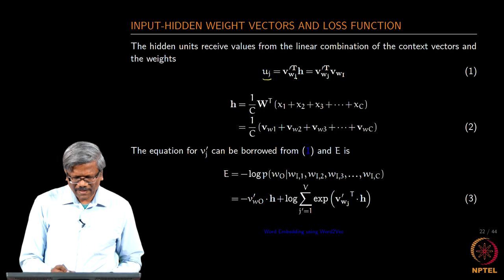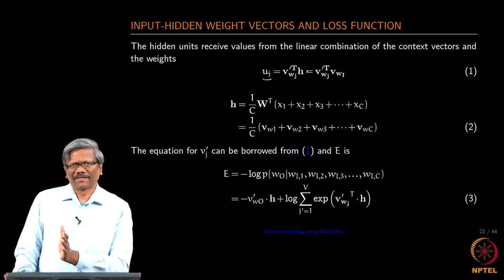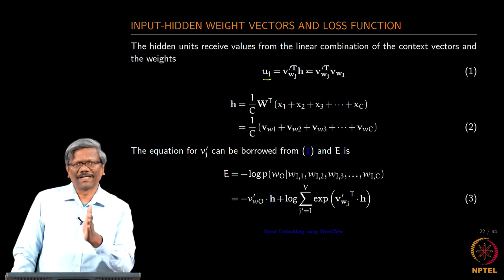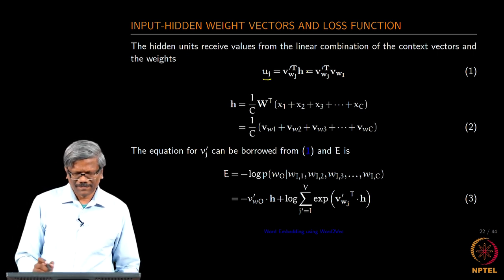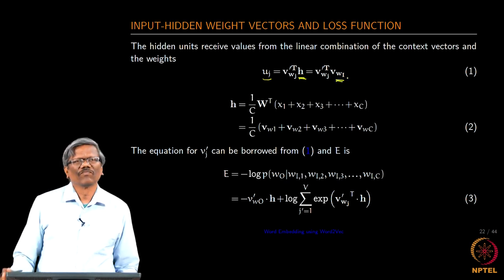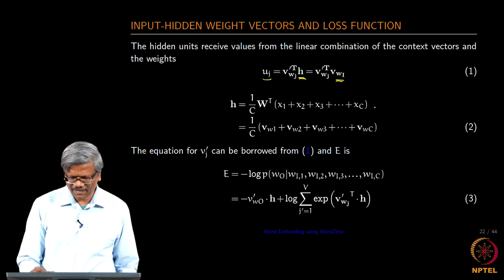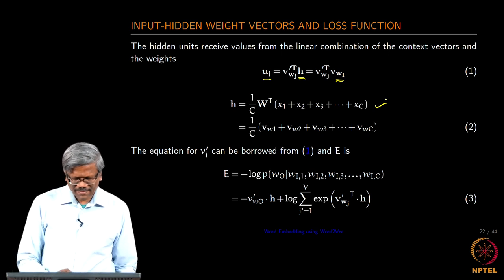The u_j is the context vector that we are talking about. It is nothing but the context matrix that we already have and the dot product of it with the hidden layer values. And then the hidden layer value is nothing but the set of input context word.